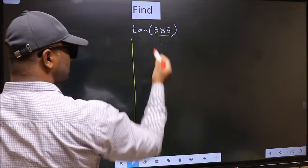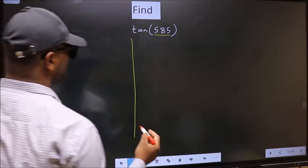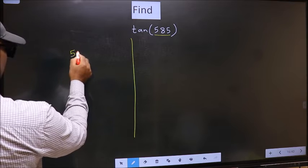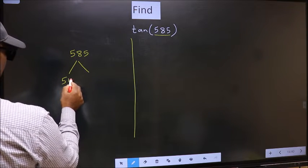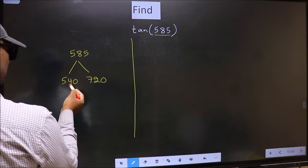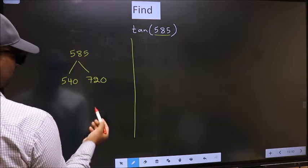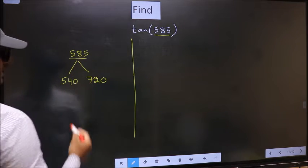585 lies between which two multiples of 180. What I mean is, 585 lies between 540 and 720. This is 180 × 3 and this is 180 × 4. Between these two numbers, 585 lies.